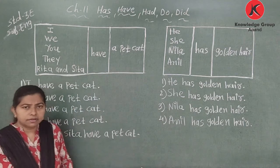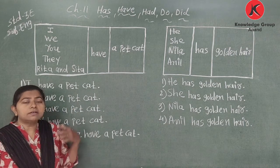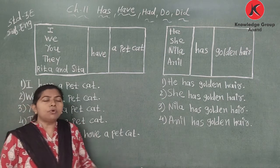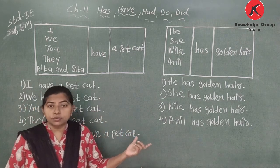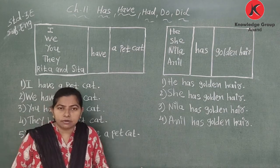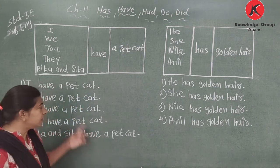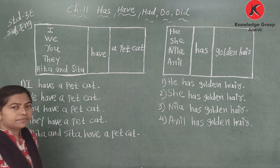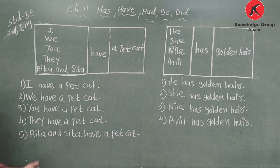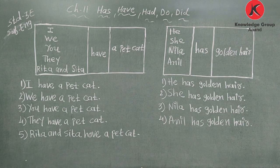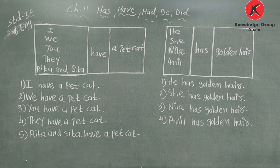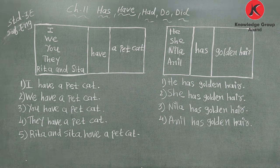So, to show that something belongs to someone — has is used with singular nouns, and have is used with plural nouns. Write down all the things in your English grammar.